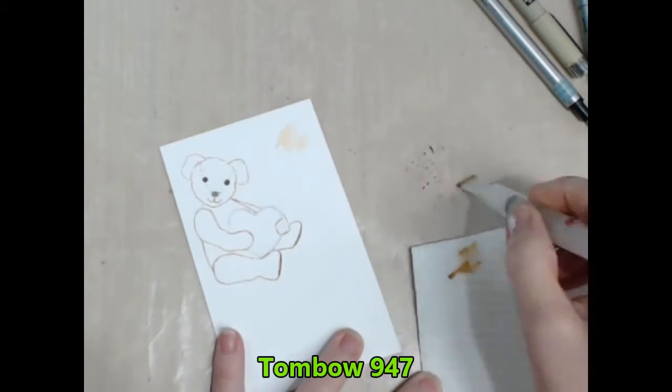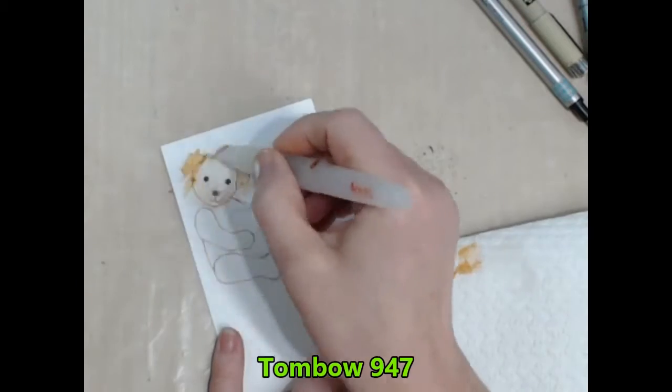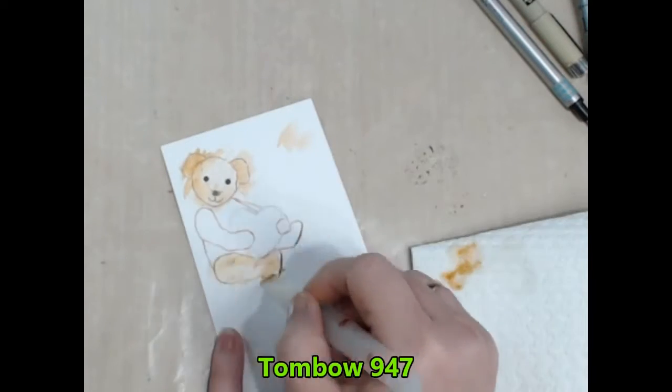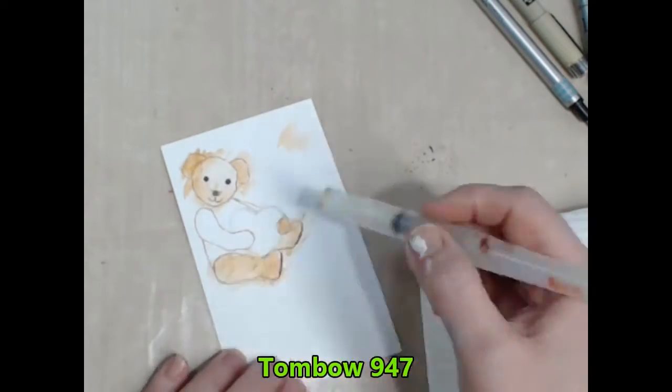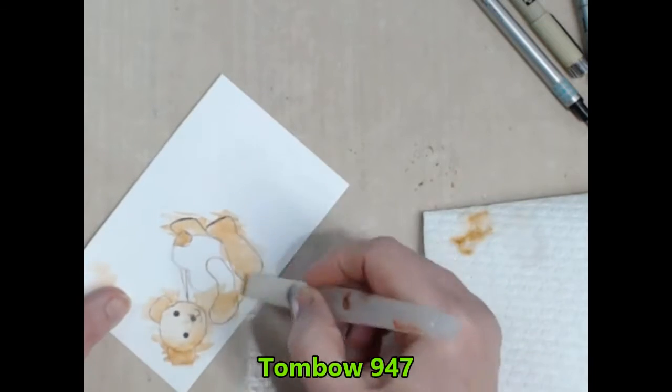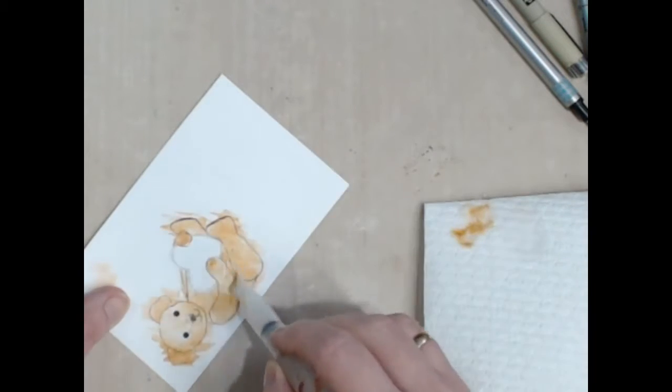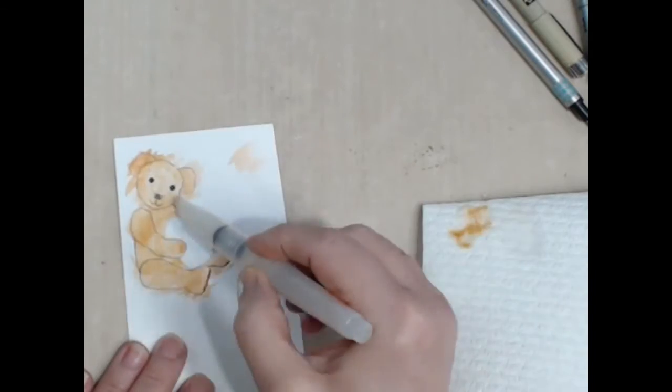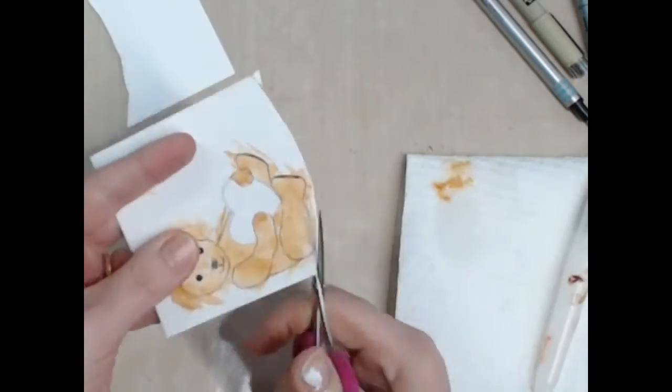I draw on my teflon mat with my Tombow pen and with my broad water brush I pick up the ink and apply it to the teddy bear in choppy little strokes. I'm not after a really smooth coverage here. I want it choppy and soft like teddy bear fur.